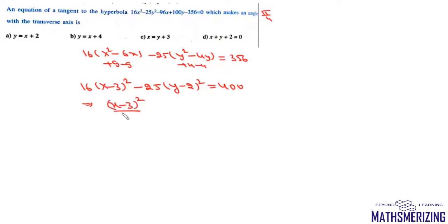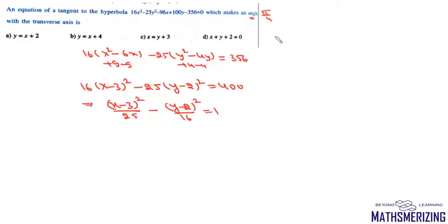The equation of the hyperbola in standard form is: (x-3)²/25 - (y-2)²/16 = 1. The slope is tan(θ), so since the angle is π/4, the value of m is simply 1.